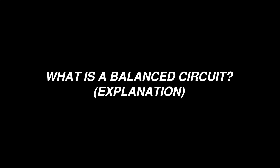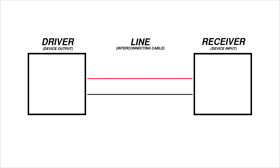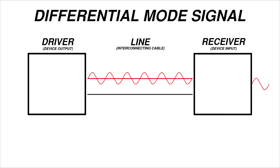In any circuit, you'll find a driver, a line, and a receiver. A balanced receiver uses a differential device, which will only respond to the difference in voltage between the two wires on the interconnecting cable. So if there's a voltage on one wire and not the other, the voltage will go through. This is an example of a differential mode signal.